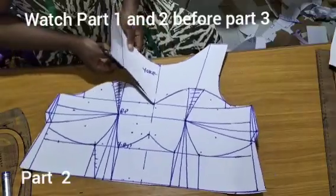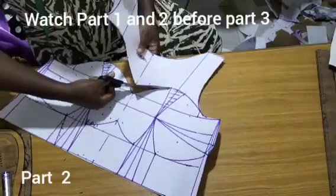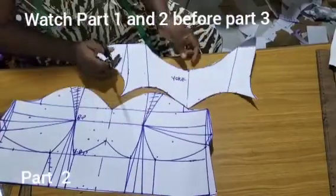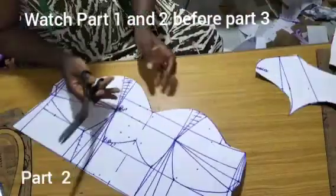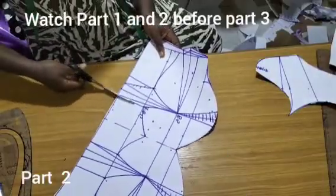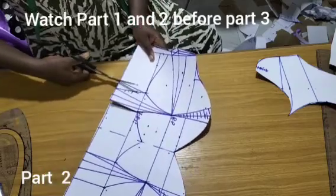This is the yoke for this dress. I'll set the yoke aside and we want to talk about what we have on the bust here. From here I will cut into the bust point and from here I will cut in. I'm going to cut everything.